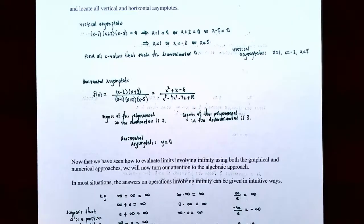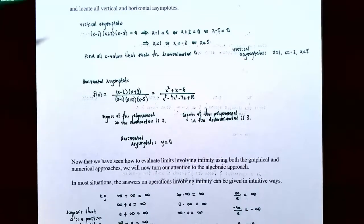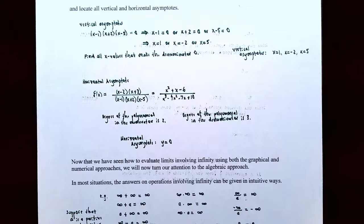This is a good place to stop. In this video, we talked about how to find horizontal and vertical asymptotes algebraically, with a graph, and with a table of values. We also discussed the relationship between limits involving infinity and vertical and horizontal asymptotes. If you have questions about any examples or the homework for this section, please let me know. I'll see you in the next video when we talk about limits involving infinity with application problems.